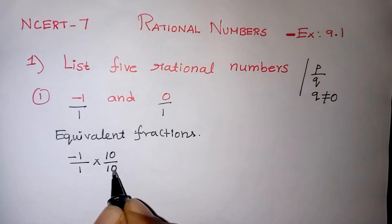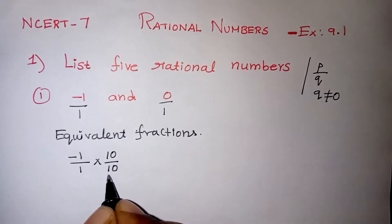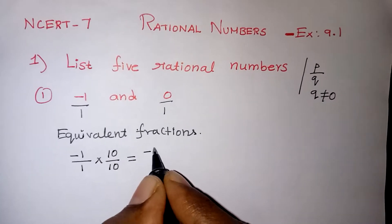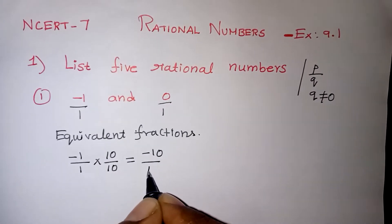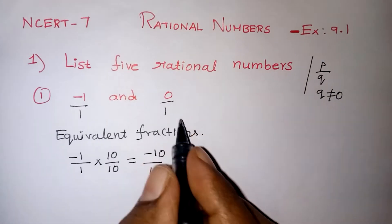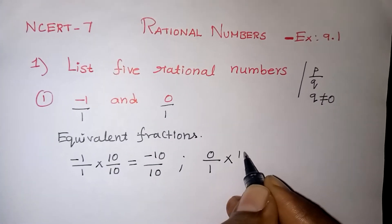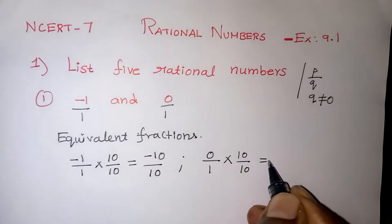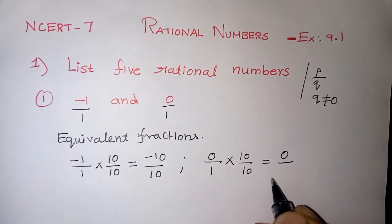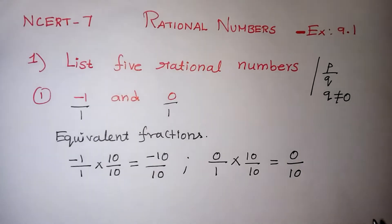The first number is minus 1 over 1. I am multiplying by 10 over 10, giving minus 10 over 10. The second number is 0 over 1. Multiplying by 10 over 10 — multiplying by 0 will always give you 0, and 1 into 10 is 10 — so we get 0 over 10.